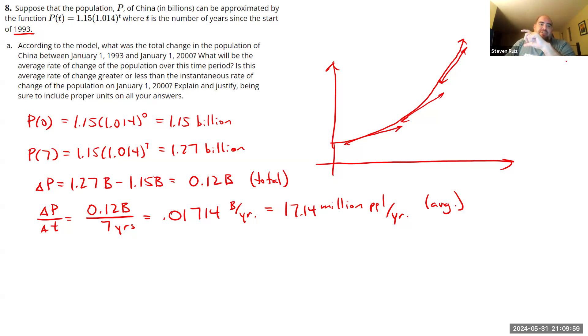Which means the more time that passes, not only are there more people in China, but the rate at which the population grows is also going to get greater. So because of that, the average rate of change, or sorry, the instantaneous rate of change in 2000 will be larger than the average rate of change between 1993 and 2000.